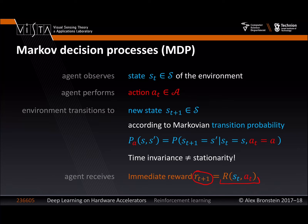Regarding the state and action spaces: we can assume both are known to the agent. However, the transition probability is not assumed to be known. If we knew the rules of the game — the transition probability and reward function — we'd be in the setting called optimal control. Reinforcement learning combines optimal control with system identification: we don't know the rules of the game, we want to discover them and also play optimally.